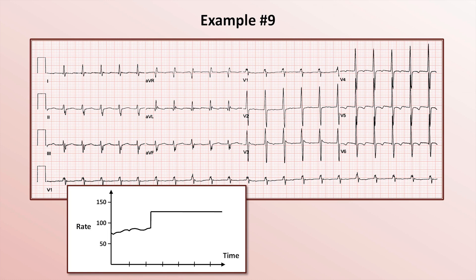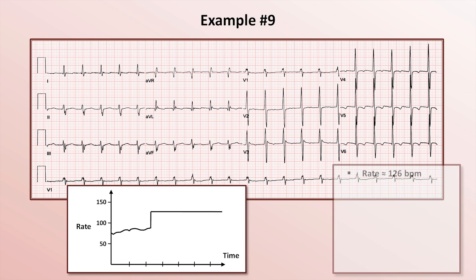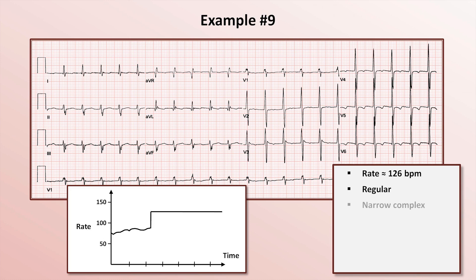Going through the six questions, there are about two and a half large boxes between successive QRS complexes, suggesting a rate in the mid-120s — more precisely about 126 using the 10-second rule. It's regular and narrow complex.